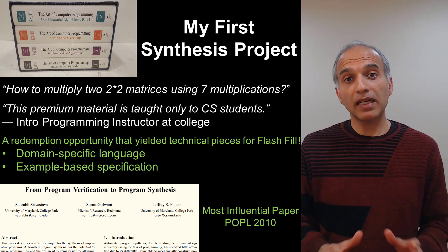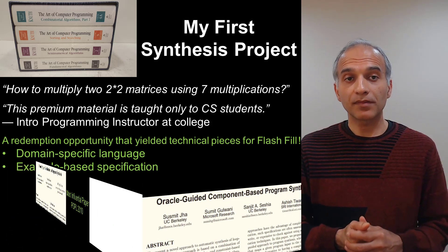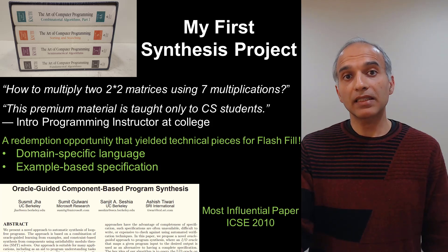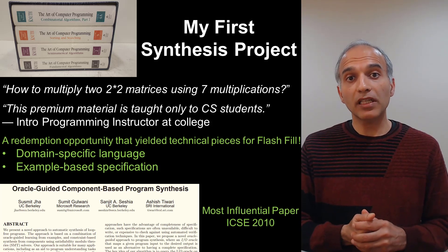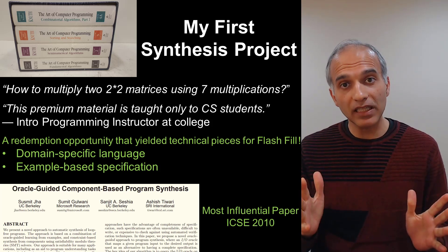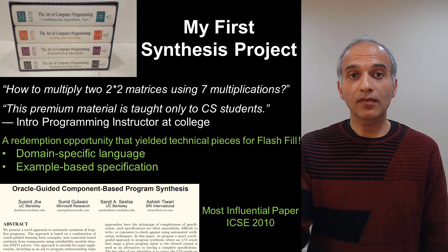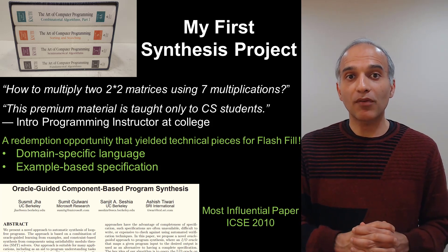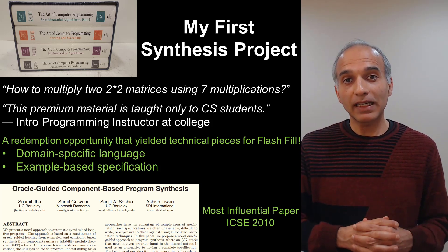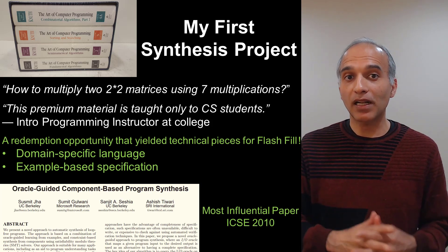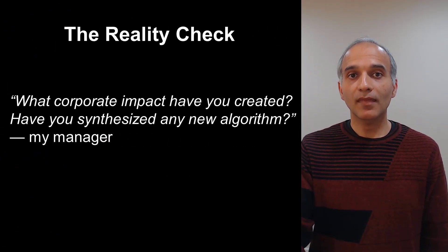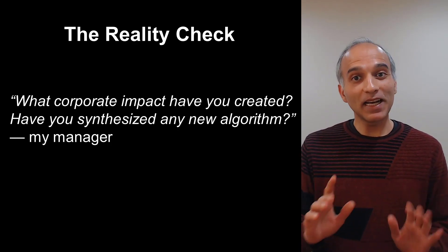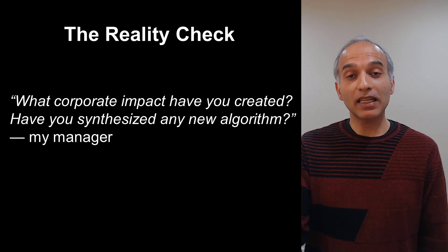However, examples are an extremely ambiguous form of intended specification. And that's why this ICSI paper that I co-authored with Ashish Tiwari, Sushmet Jha, and Sandeet Seshya shows that the user can be guided to provide the right set of examples to converge to the intended algorithm. This ICSI paper coincidentally also received the 10-year most influential paper award a few months ago and addressed the challenge of synthesizing tricky bit-vector algorithms. In spite of all of this, my manager wasn't impressed, and he asked me: have you been able to synthesize any new algorithm?